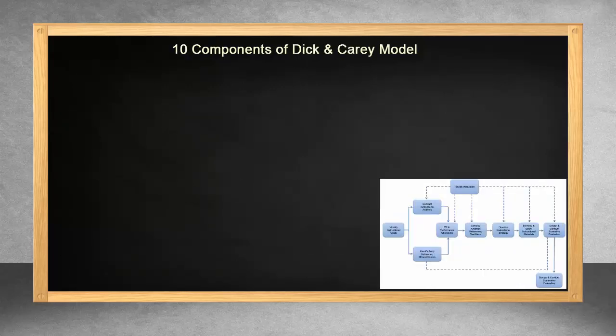The Dick and Carey model is made up of ten stages and each stage has an input and an output. All the steps in this instructional system design should be employed in order to design, develop, evaluate, and revise instruction.